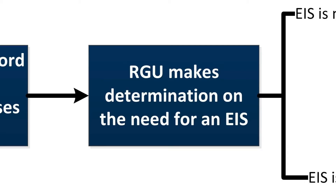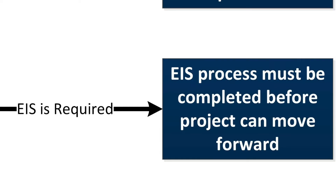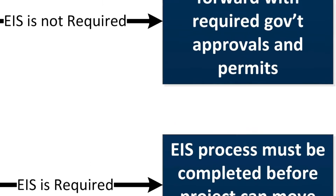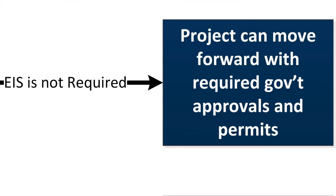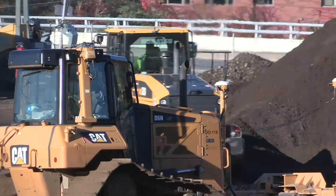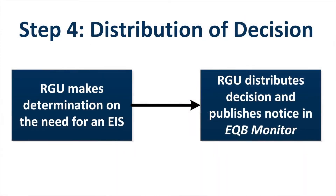Finally, if an Environmental Impact Statement is required for the project, the EIS process must be completed before the project can move forward. If an EIS is not needed, then the project can move forward with the required permits and approvals. Either way, the RGU must post a notice of their decision in the EQB Monitor.